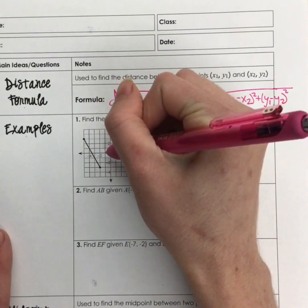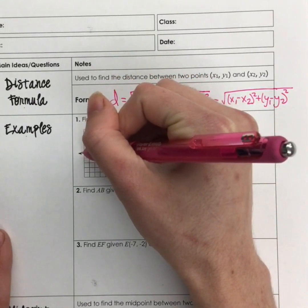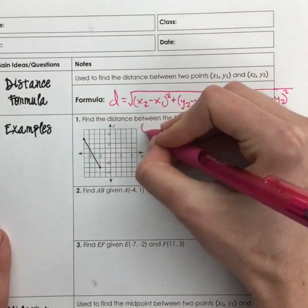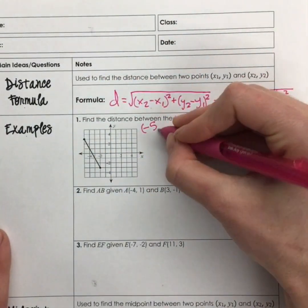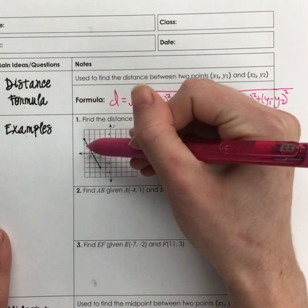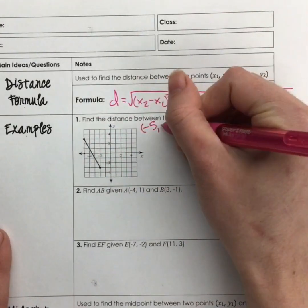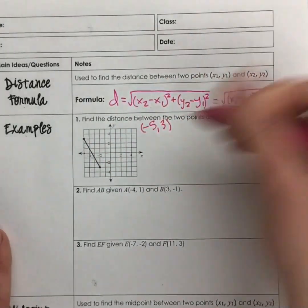We have negative 1, 2, 3, 4, 5 on the x, so we have negative 5, comma, and then we go up 1, 2, 3, so negative 5, 3 for our first point.